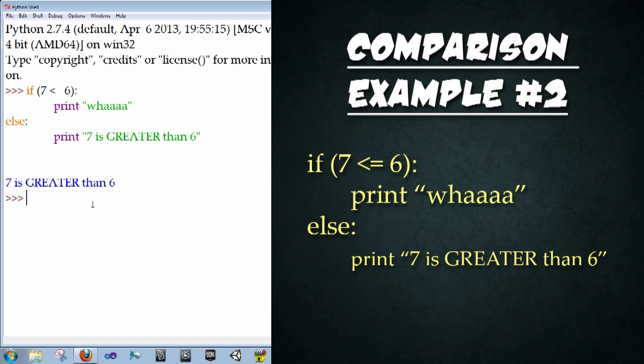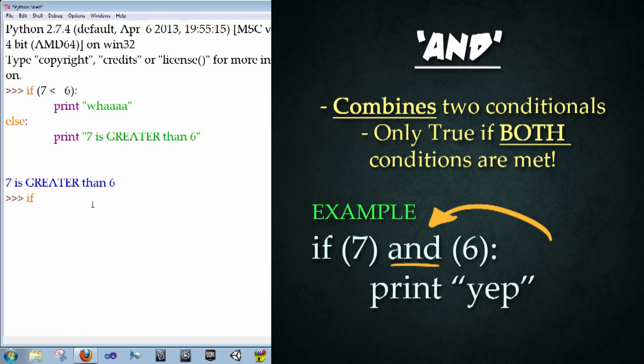Let's say that we had multiple conditions that we wanted to check. You can use one of two words and or or to combine different conditionals into a single statement. So what we can do is we can type if, and then we're going to go open parentheses seven close parentheses and open close, open parentheses, close parentheses with six inside colon print yep. Enter, enter. And it's yep.